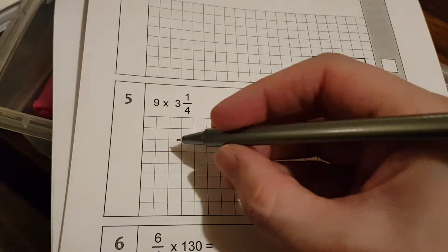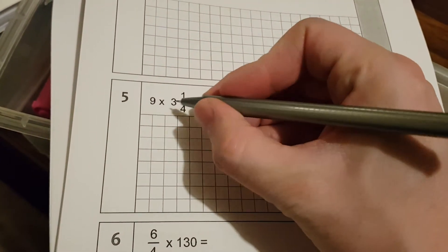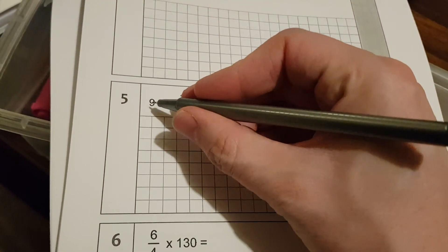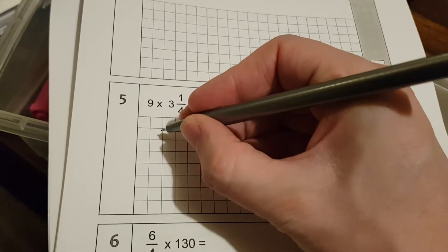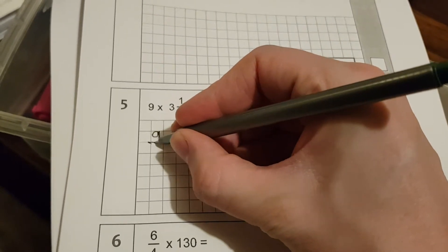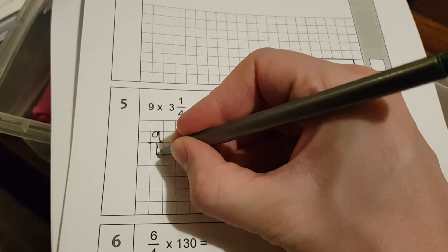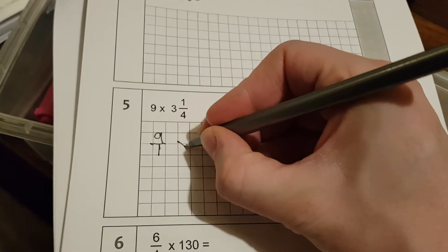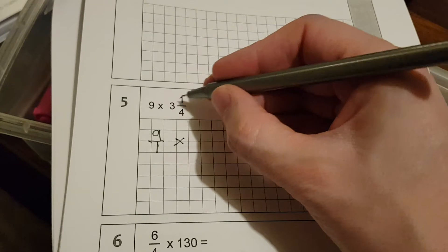So I think it's best if we do it by turning both of these into improper fractions. So 9 whole ones as an improper fraction is 9 over 1, and we're going to multiply that by this.